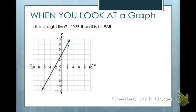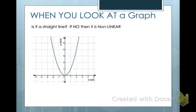When you're looking at a graph, it's super easy. If it forms a straight line, then it's linear — so this is an example of a linear function. This is an example of nonlinear because it does not form a straight line; it forms a curved line.